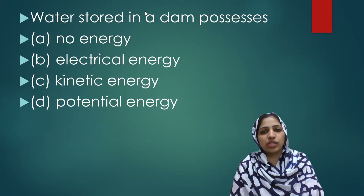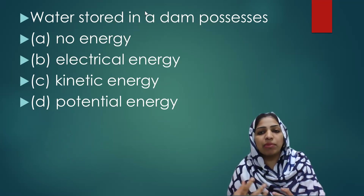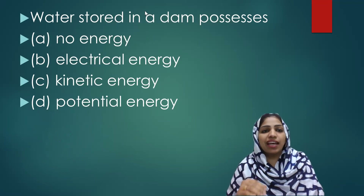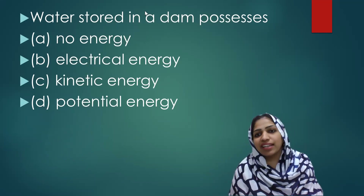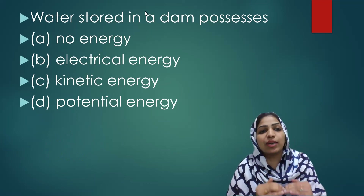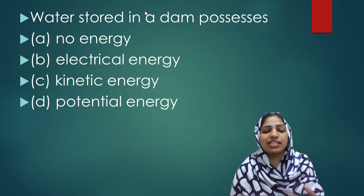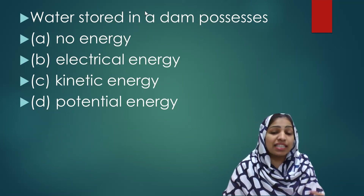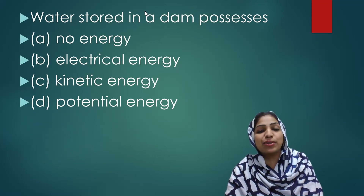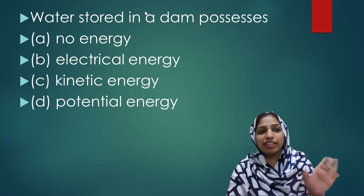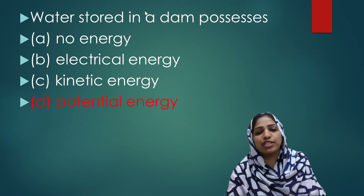Water is stored in a dam. What form of energy is this? Dams are built at a very high position — that is why we have a very high story. Electricity is produced from dams. The energy stored is potential energy — potential energy by virtue of the position of the object. This potential energy will change into electrical energy through many energy transformations.